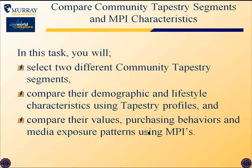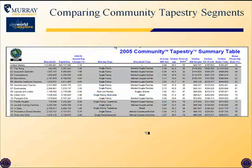In the first task, you'll acquaint yourself with the Community Tapestry Segmentation System and the MPI values by identifying, in one of several different ways, two different Community Tapestry segments, comparing their demographic and lifestyle characteristics using printed profiles of those segments, and then comparing their values, purchasing behavior, and media exposure using the MPI system.